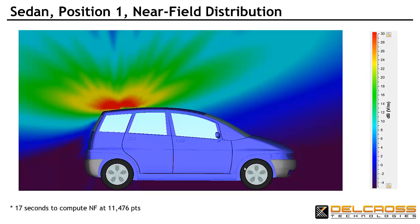Near fields for this installed location are computed in only 17 seconds and clearly show the lack of radiation toward the front of the vehicle.